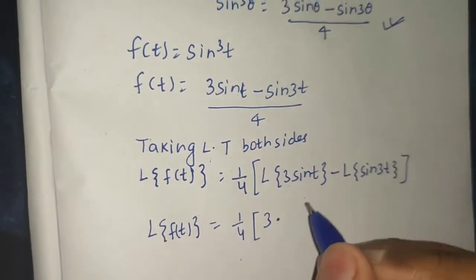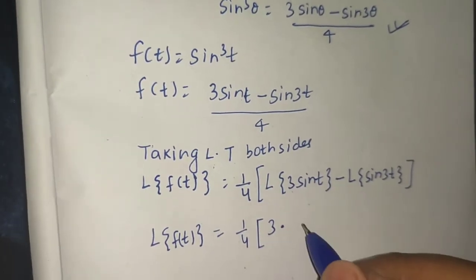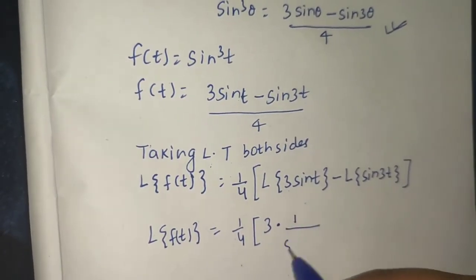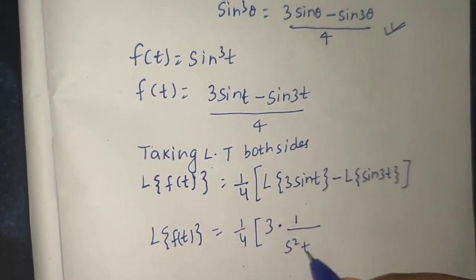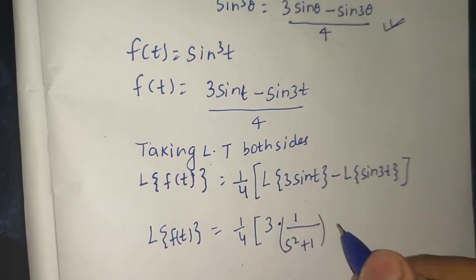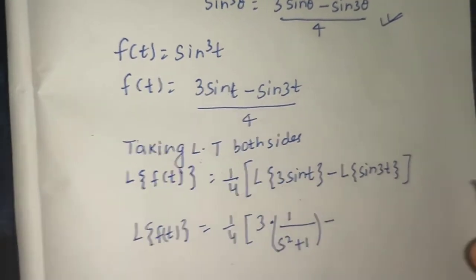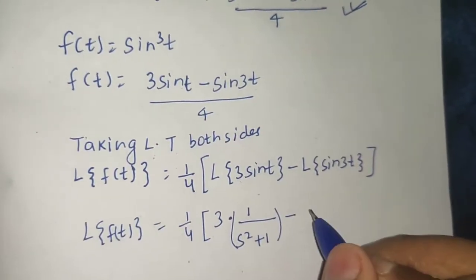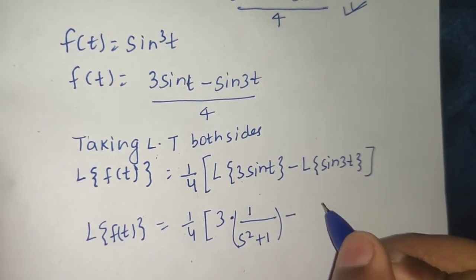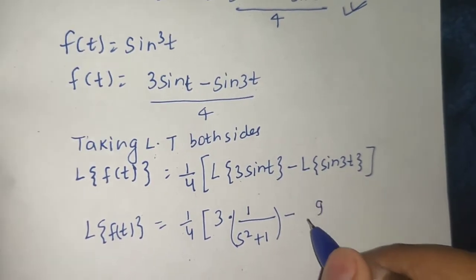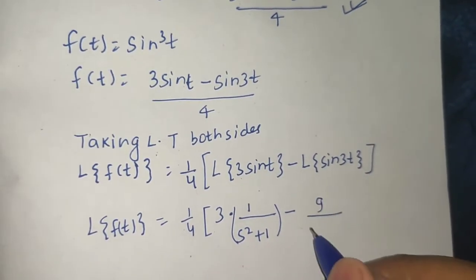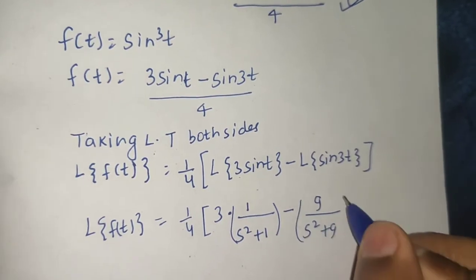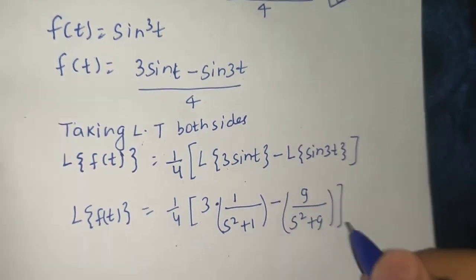Using the standard formula, Laplace of sin(at) = a / (s² + a²). So Laplace of sin(t) = 1 / (s² + 1), and Laplace of sin(3t) = 3 / (s² + 9). This gives us Laplace of f(t).